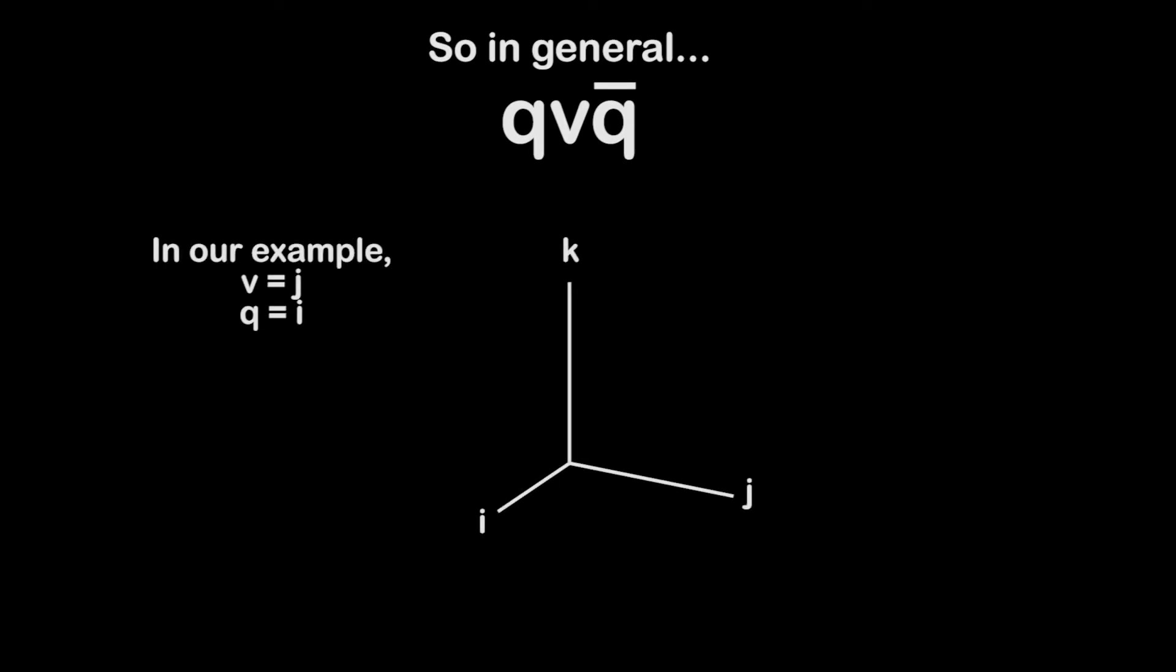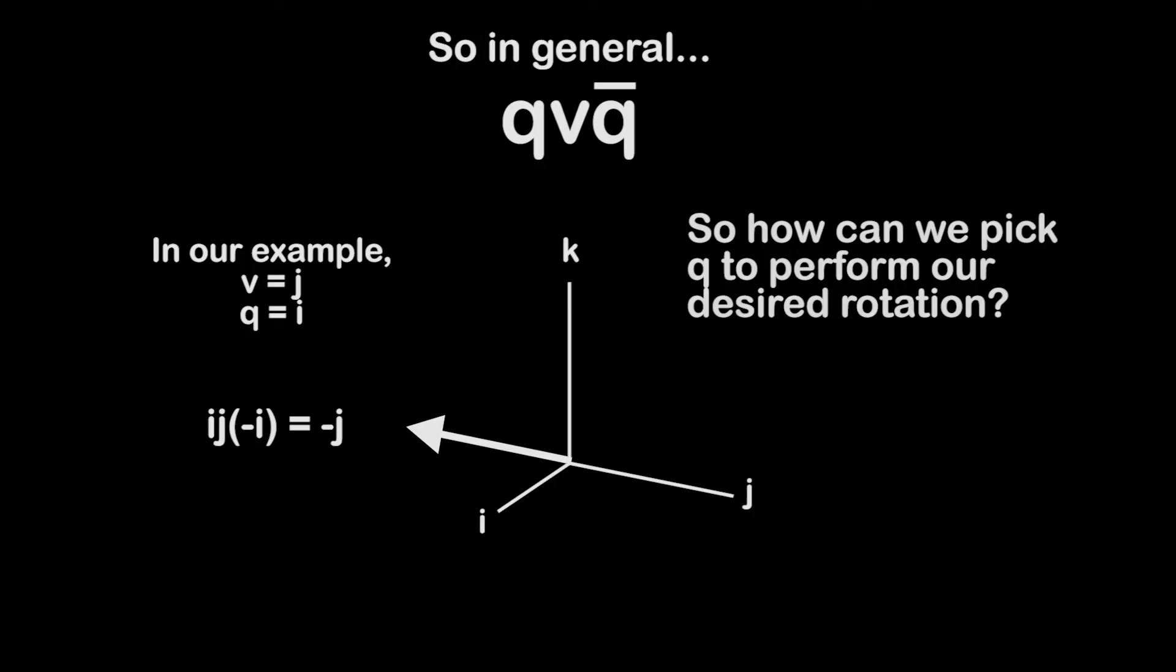In the example we just did, v equals j and q equals i. Performing the multiplication, we saw that v rotates 180 degrees about the i-axis. So the obvious question now is, how do we pick q to perform our desired rotation about any axis in any angle?